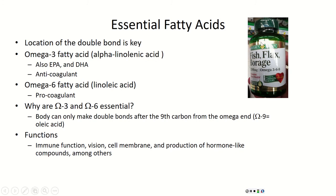I want to bring your attention to this picture right here — this is a supplement you could buy in a store. One of the things we talk about in this class is how supplements aren't really necessary unless prescribed by a doctor for certain conditions, like pregnancy or osteoporosis. But this product — a flax and borage product — has omega-3, omega-6, and omega-9. The interesting thing is: as we just learned, why would they include the omega-9? Omega-9 is something your body can make on its own.